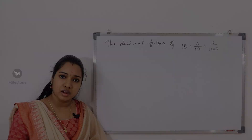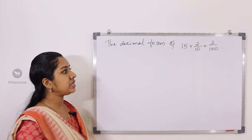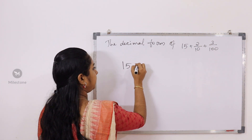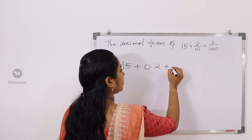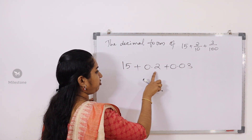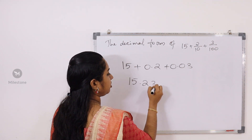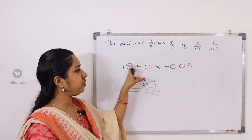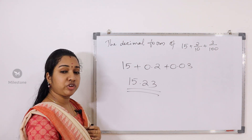The decimal form of 15 + 2/10 + 3/100. That is 15 plus 0.2 plus 0.03. The answer is 15.23.